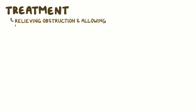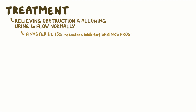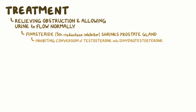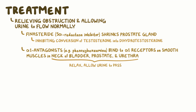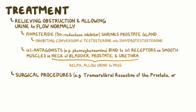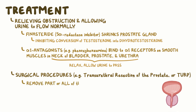The treatment of BPH focuses on relieving the obstruction and allowing the urine to flow normally. This can be done through medications like finasteride, a 5-alpha-reductase inhibitor, which shrinks the prostate gland by inhibiting the conversion of testosterone into dihydrotestosterone. Next, alpha-1 antagonists like phenoxybenzamine can bind to A1 receptors on the smooth muscles in the neck of the bladder, the prostate, and urethra, causing them to relax and allow urine to pass. In some cases, surgical procedures like transurethral resection of the prostate, or TURP, can be done to remove part or all of the prostate.